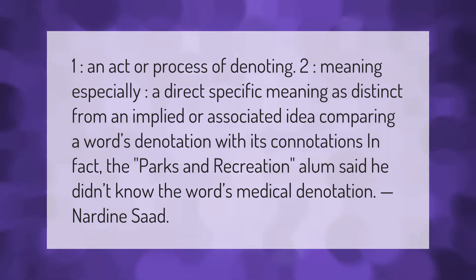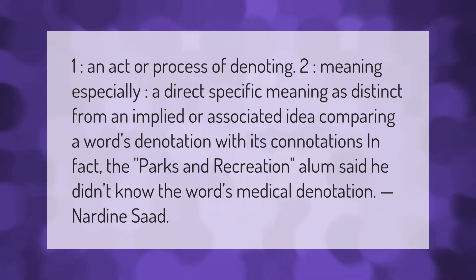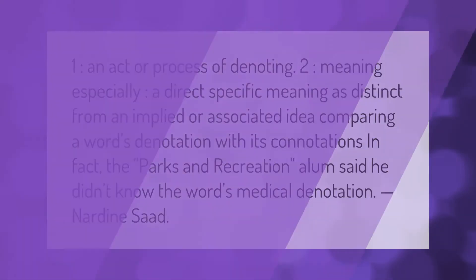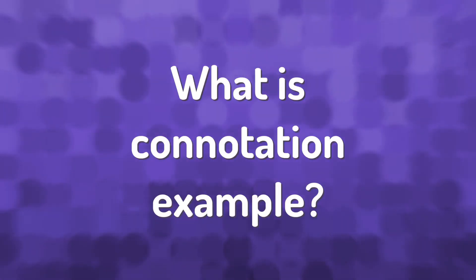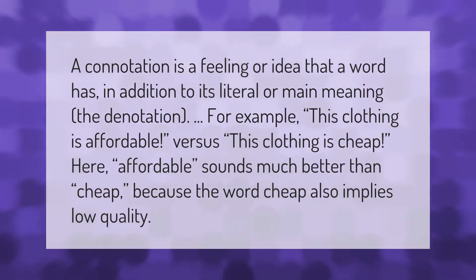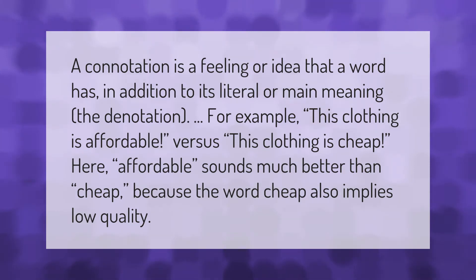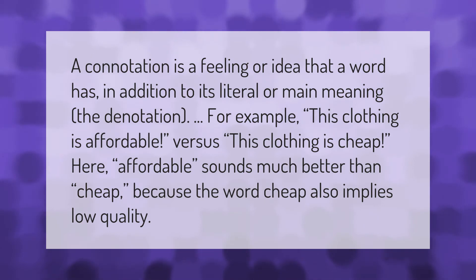Denotation: one, an act or process of denoting; two, a meaning, especially a direct specific meaning, as distinct from an implied or associated idea. Comparing a word's denotation with its connotations — a connotation is a feeling or idea that a word has in addition to its literal or main meaning. For example, 'this clothing is affordable' versus 'this clothing is cheap.' Here, 'affordable' sounds much better than 'cheap' because the word 'cheap' also implies low quality.